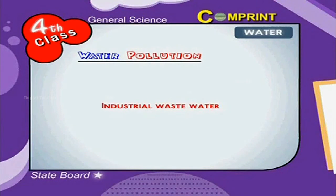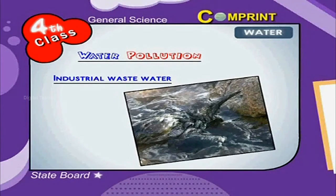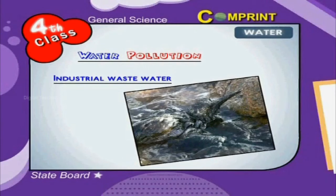Industrial Waste Water. Many chemicals are produced as waste materials in industries. When these wastes are sent into rivers, the water gets polluted.